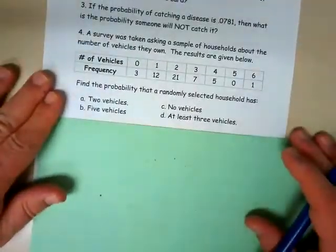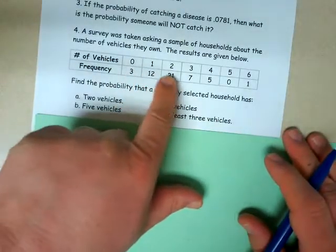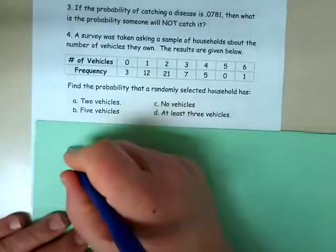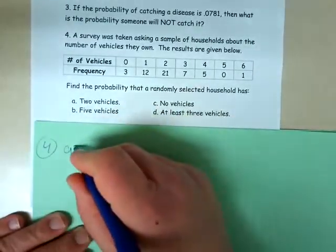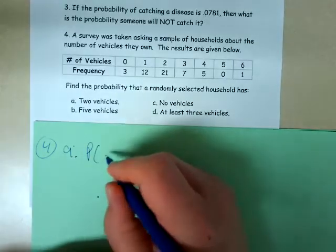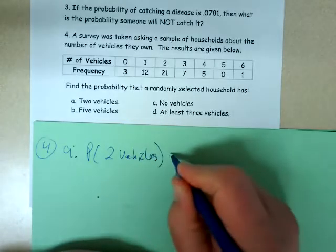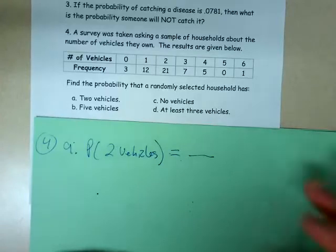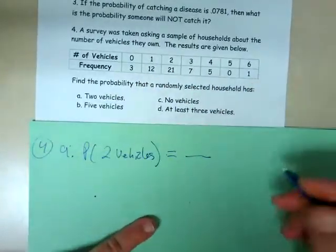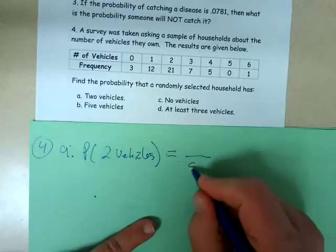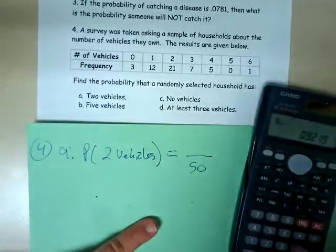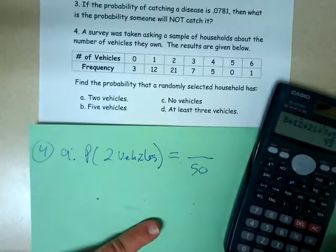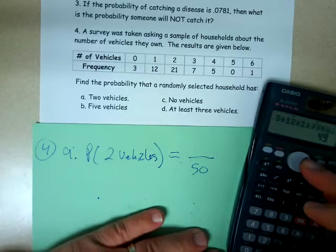Now for the last problem: I have a frequency distribution from a survey of households with 0, 1, 2, 3, 4, 5, or 6 vehicles — very similar to a TV example. The first question is: what's the probability that there are two vehicles? To get the total number of outcomes, I add up all the frequencies: 3 plus 12 plus 21 plus 7 plus 5 plus 1. I get 49 — not 50 as I intended, but that's okay.